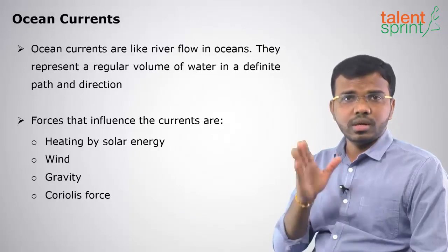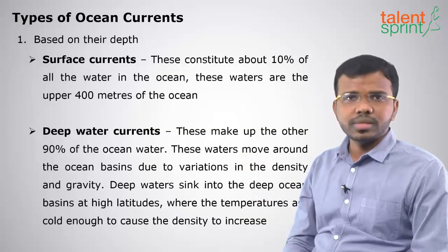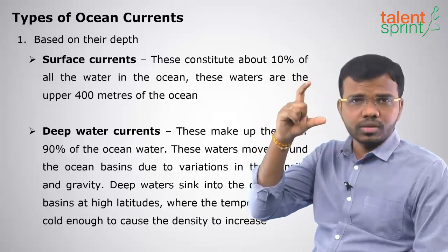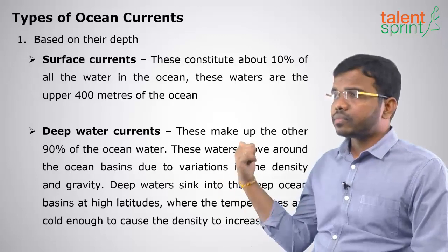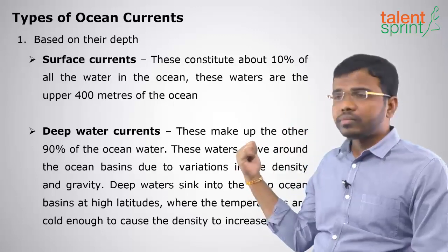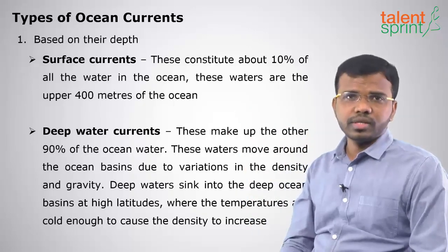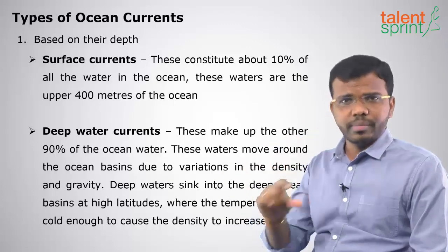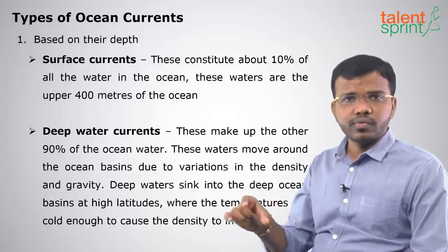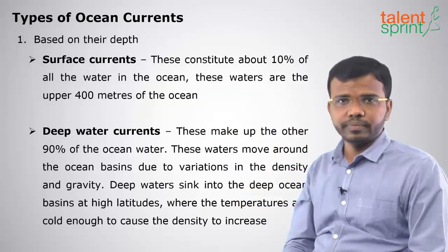Waves and tides do not move water from one place to another, but ocean currents move from one place to another. Types of ocean currents: first, based on depth. We have surface currents, which form part of only the first 400 meters of the ocean surface, and they are only 10% of ocean currents. The remaining 90% consists of deep water currents, which are particularly colder than surface water currents and move because of temperature difference, gravity, and Coriolis force.